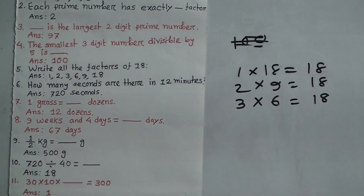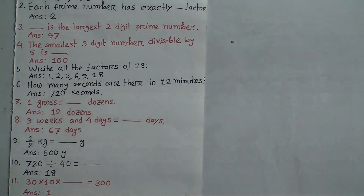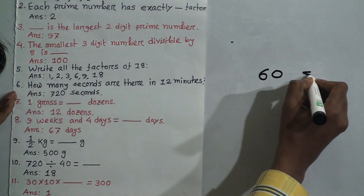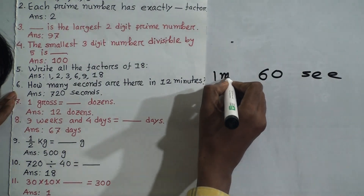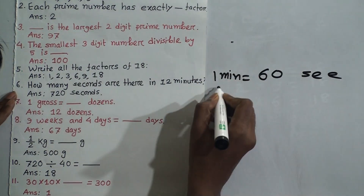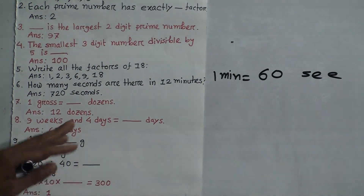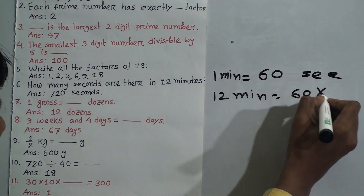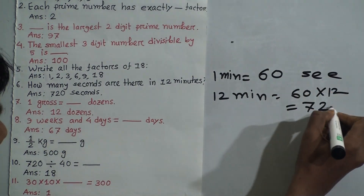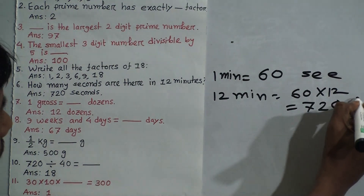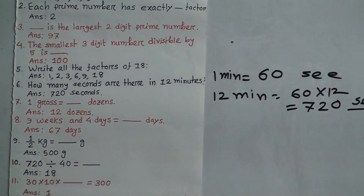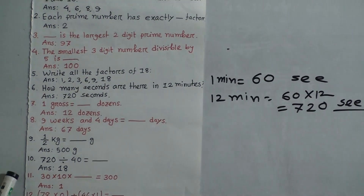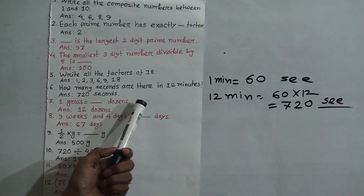Question 6: How many seconds are there in 12 minutes? We know 1 minute equals 60 seconds. Therefore, 12 minutes equals 60 × 12, which equals 720 seconds. So the answer is 720 seconds.